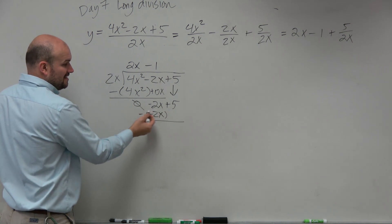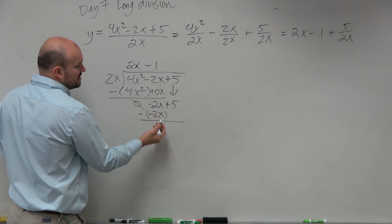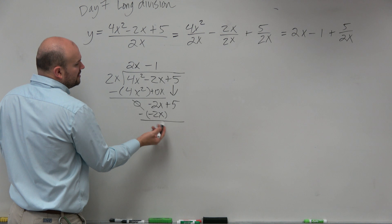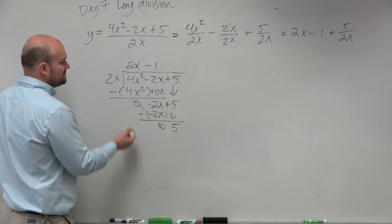Negative 2x minus a negative. See how the double negative comes in? Parenthesis is really important. Negative 2x minus negative 2x is going to be 0x, so it's just 0. And we can just bring down the 5, really subtract it from 0.